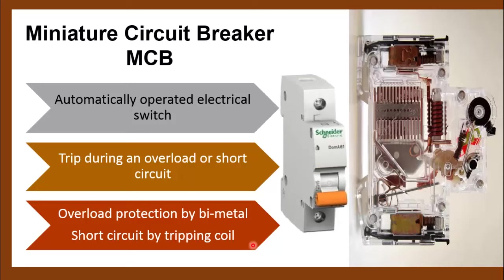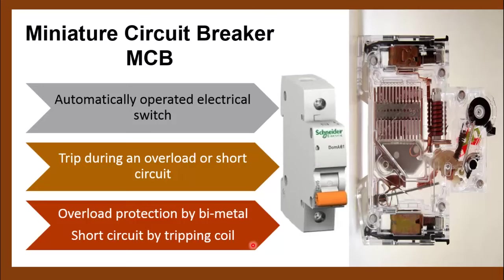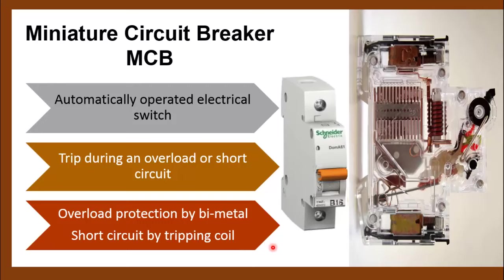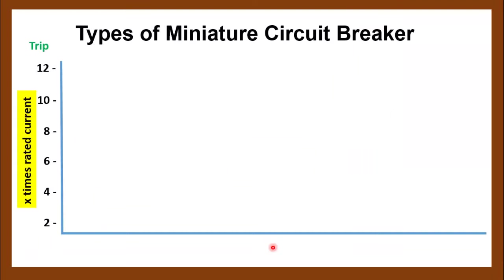The circuit breaker selection directly affects the operation of your system and the protection of your circuit. In my previous video I discussed that the miniature circuit breaker is used for domestic purposes and the molded case circuit breaker is used for industrial and commercial purposes. In domestic usage there can be small motors, large motors, or domestic appliances, each with different load behavior, so it's important to know the different types of MCB.